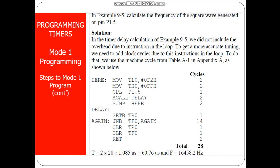The information regarding the number of machine cycles each instruction takes is found in the appendix of the textbook. Now we need to calculate the frequency of the square wave. We multiply 2 by 28, because 28 machine cycles is for generating a high signal or a low signal. In a square wave, you have both high and low. So the total time period is 2 × 28 × 1.085 microseconds for an 11.0592 MHz oscillator. The total time delay is 60.76 microseconds, and taking the inverse gives the frequency of 16,458.2 Hz — approximately 16 kHz.